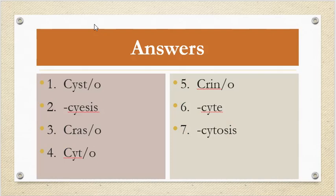The answers: number 1 is cysto. Number 2, sciesis. Number 3, craso. Number 4, cyto. Number 5, crino. Number 6, cyte. Number 7, cytosis.